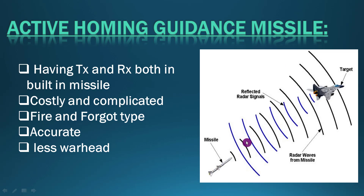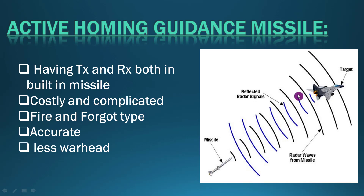Active homing is essentially a fire-and-forget system. Once you fire the missile, you don't have to track the target anymore. The missile itself tracks the target and runs after it to hit it. The missile's transmitter emits a signal, receives the reflected signals back, and by this it tracks and hits the target.